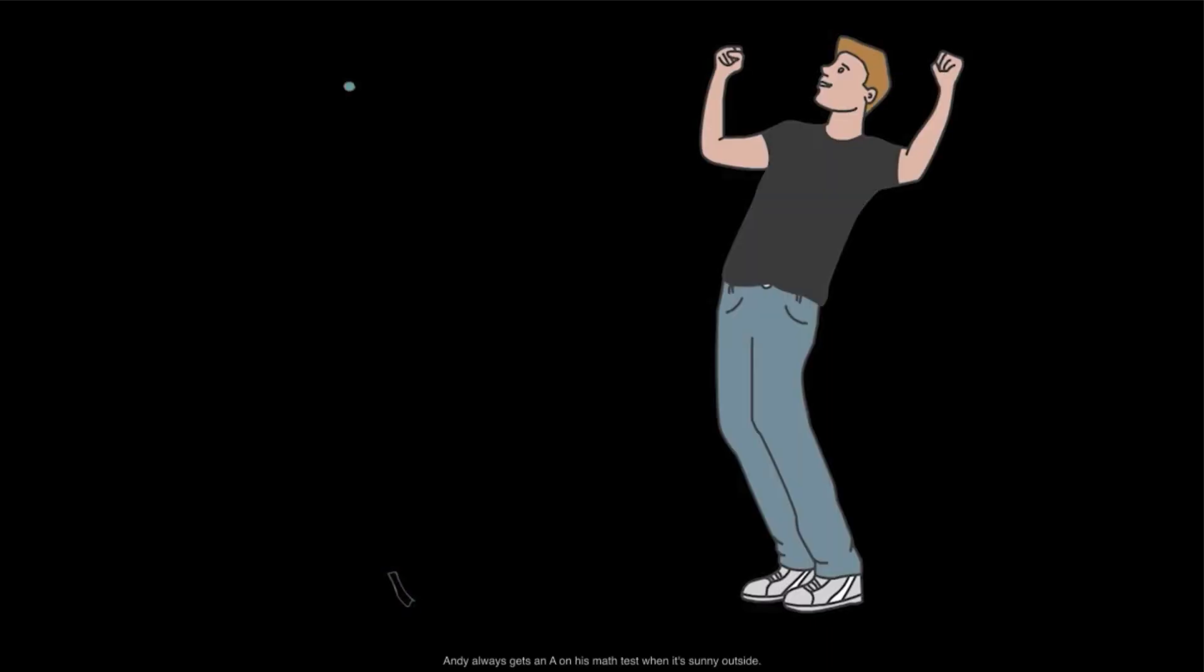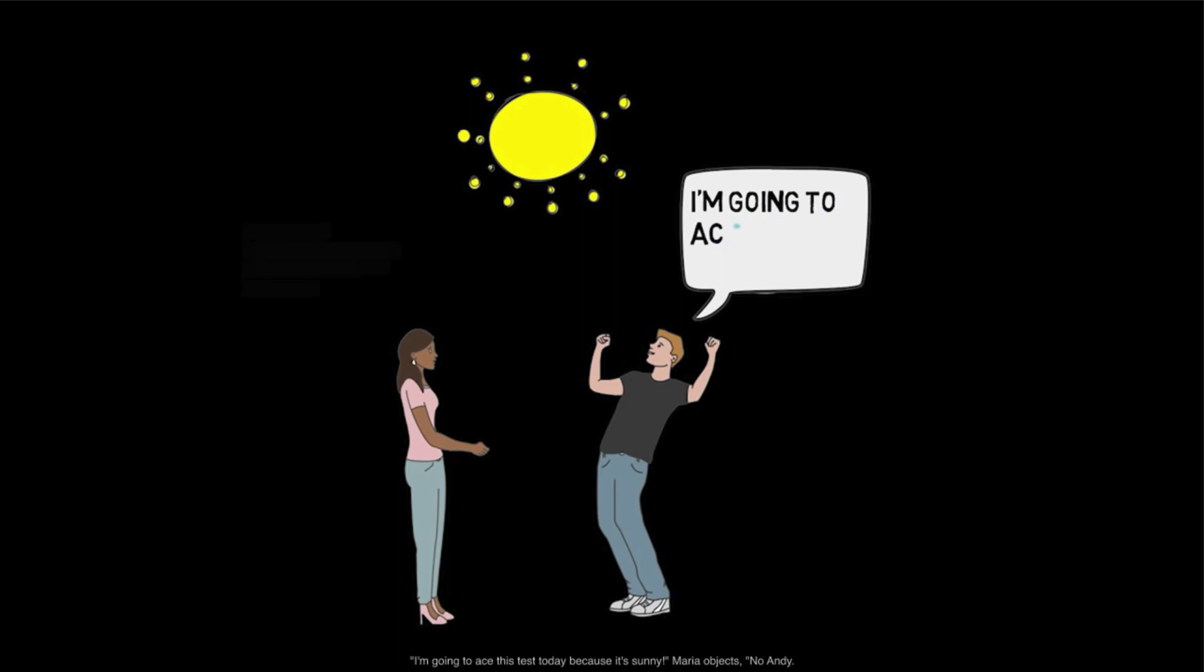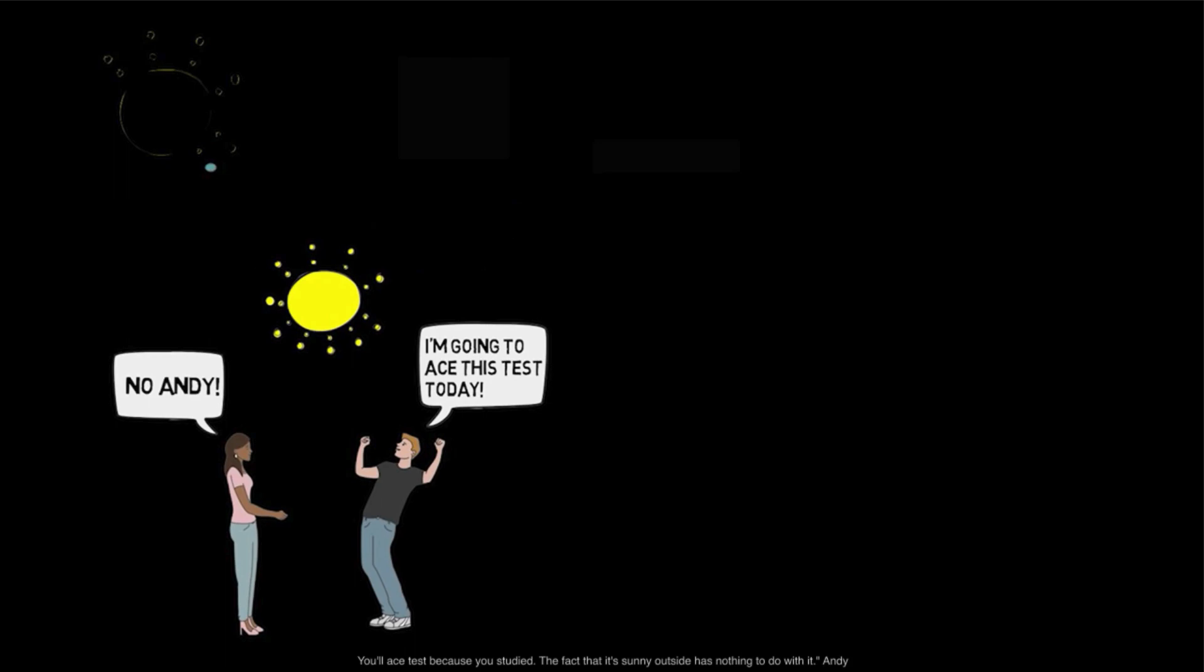Maria and Andy are high school students in Arizona. Andy always gets an A on his math test when it's sunny outside. On one sunny day before Andy goes to math class, he tells Maria, I'm going to ace this test today, because it's sunny. Maria objects. No, Andy, you'll not ace this test because it's sunny. You'll ace this test because you studied. The fact that it's sunny outside has nothing to do with it.